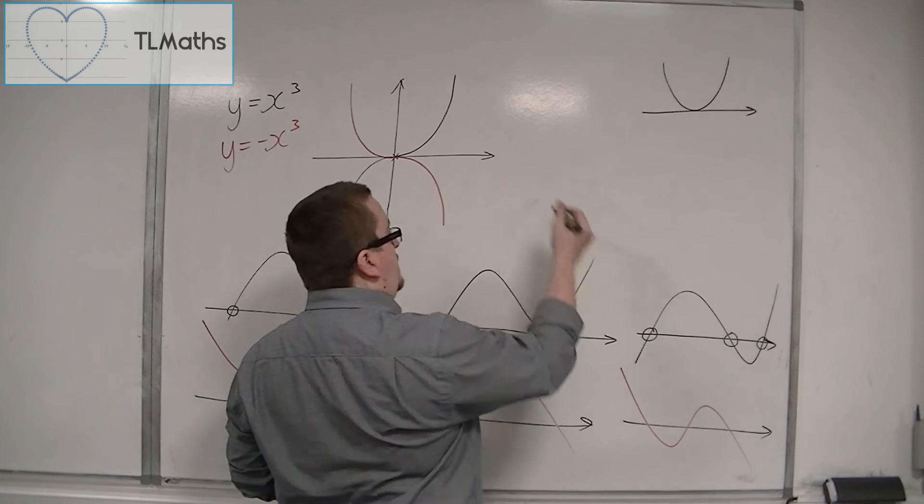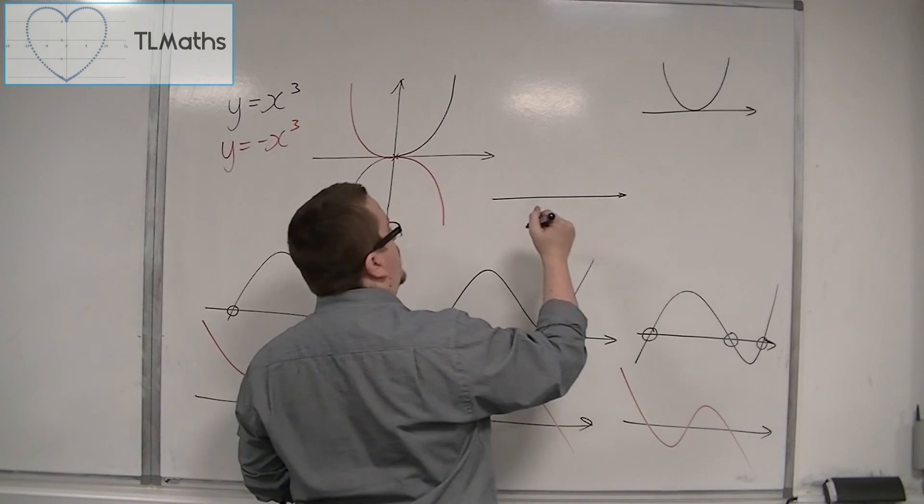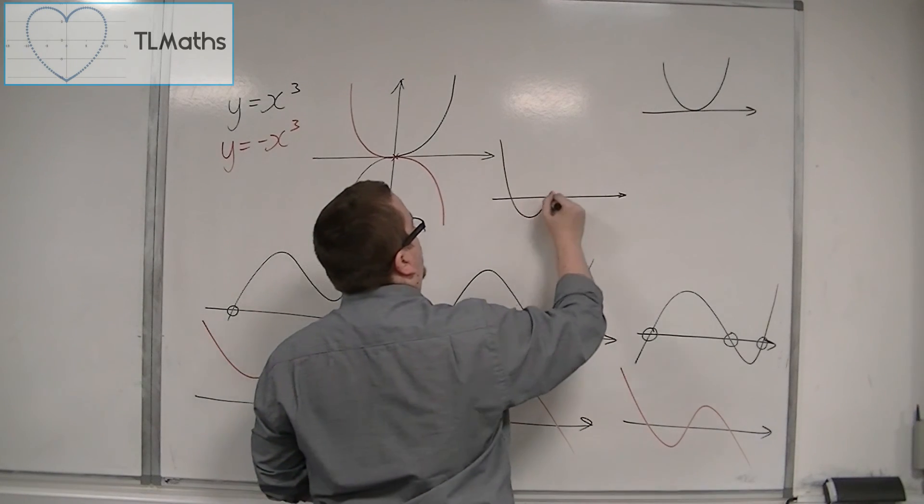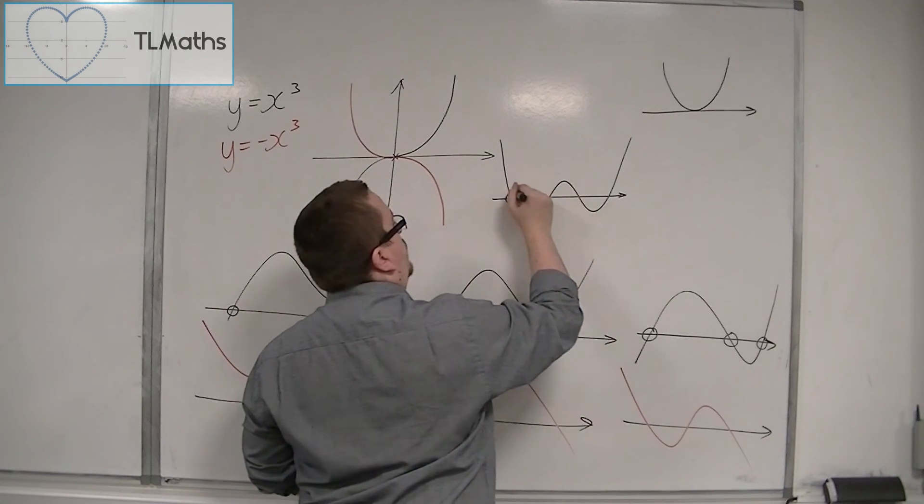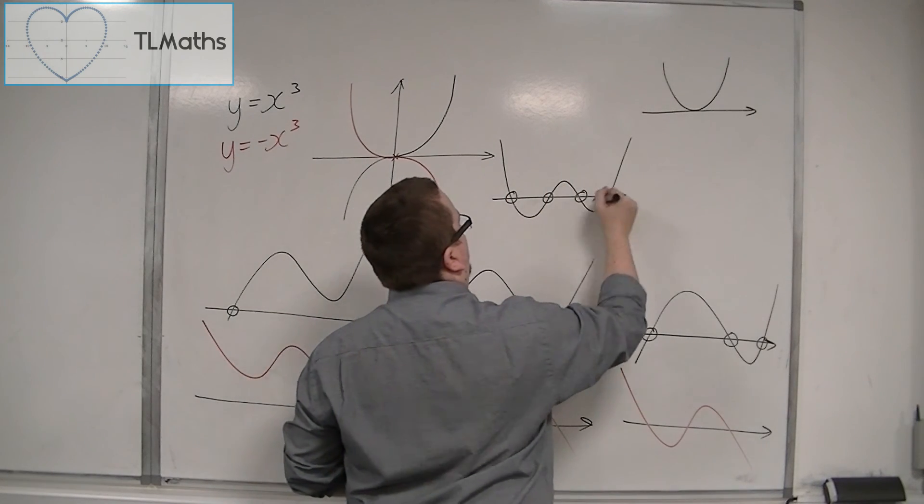And so a quartic could potentially look like this, where you have one, two, three, four solutions.